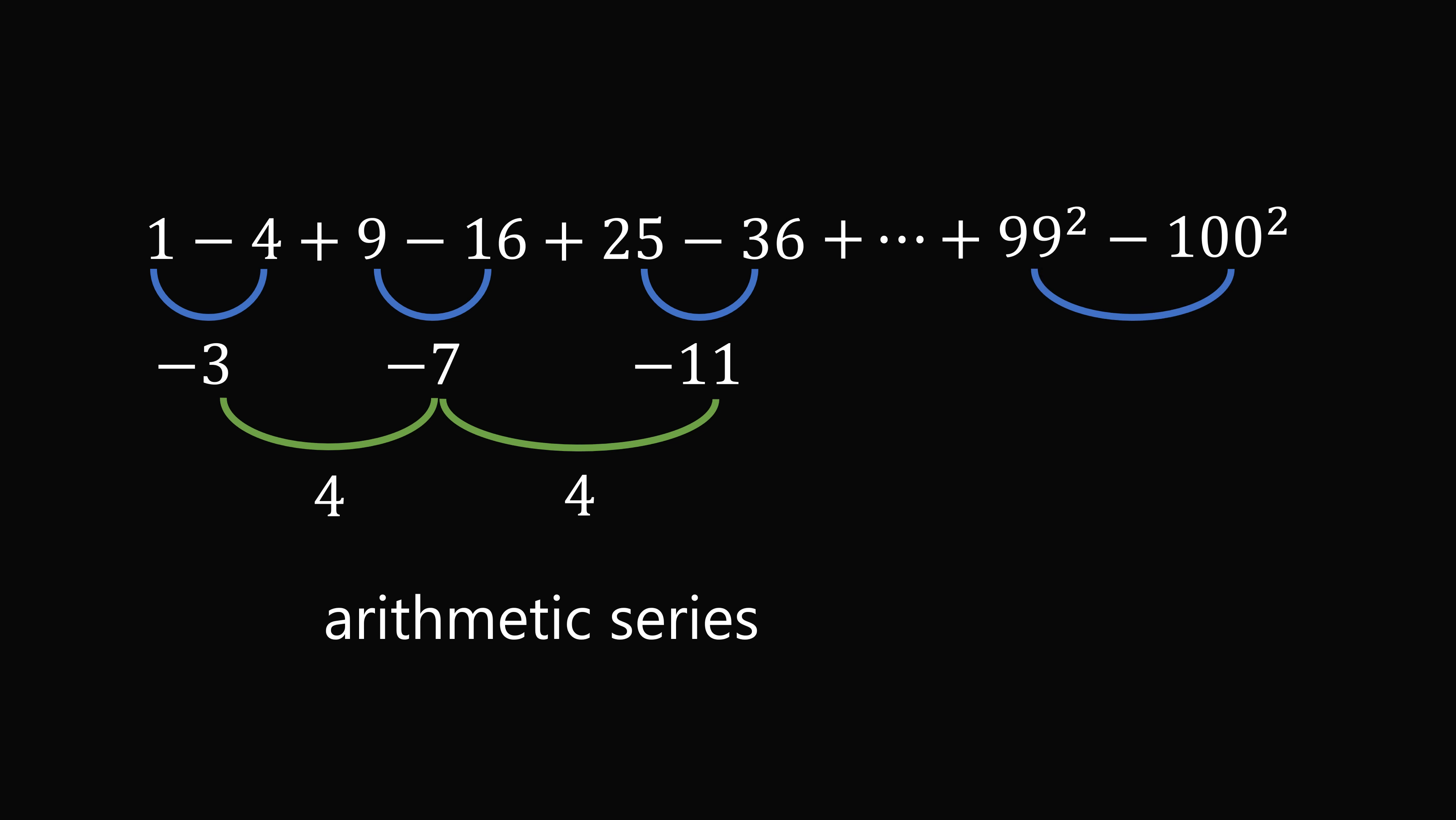So we need to calculate 99 squared minus 100 squared. But this is straightforward because we have a difference of squares. This factors to be 99 minus 100 multiplied by 99 plus 100. 99 minus 100 is negative 1, and 99 plus 100 is 199. So this is negative 199.